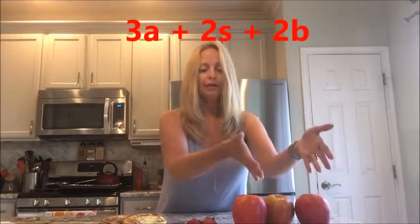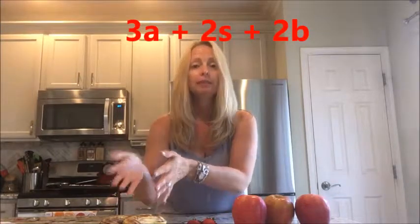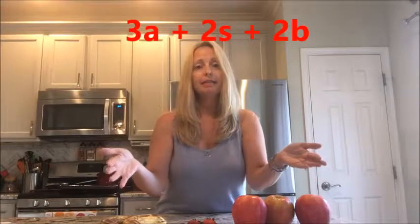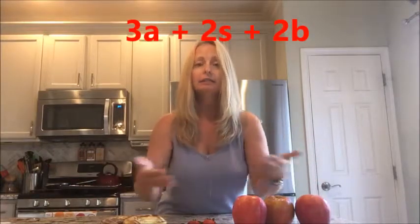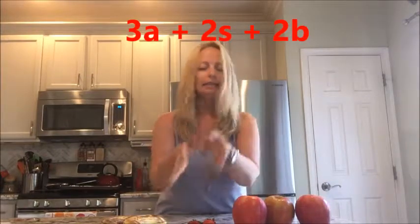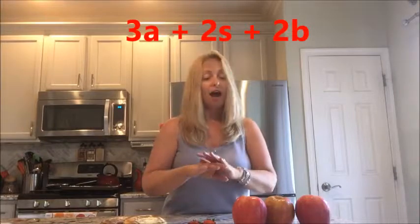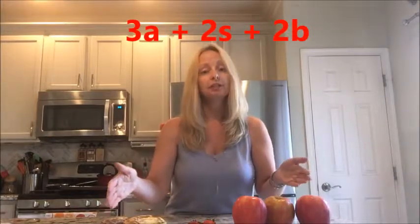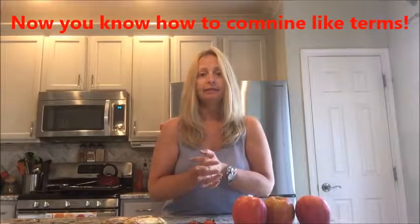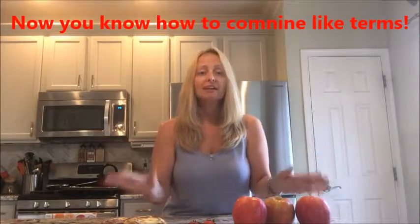So I've simplified my expression down to 3a + 2s + 2b. This is as simple as it can get because I can't combine unlike terms — a's are not like s's and they're not like b's. Hopefully that helps clarify simplifying expressions!